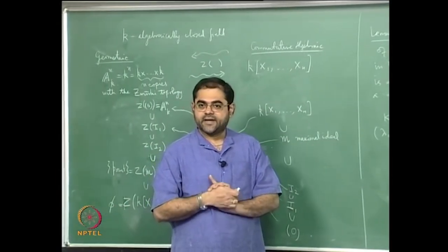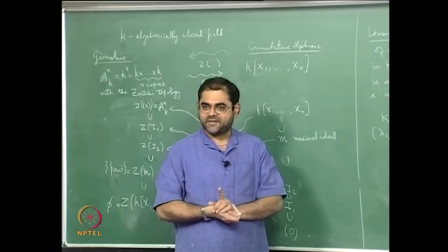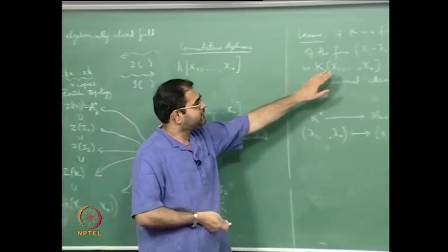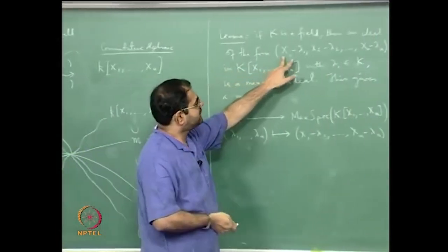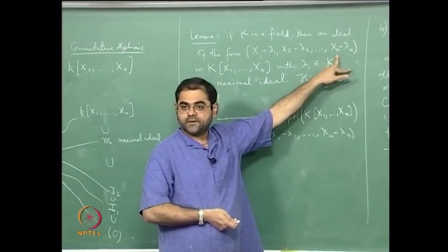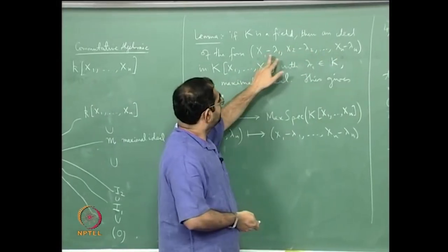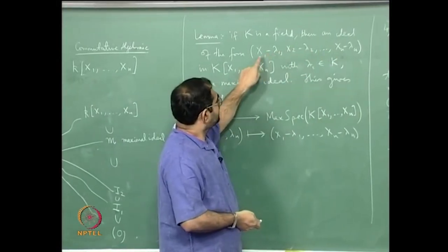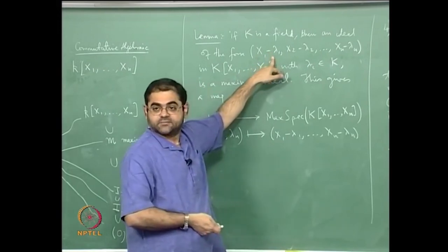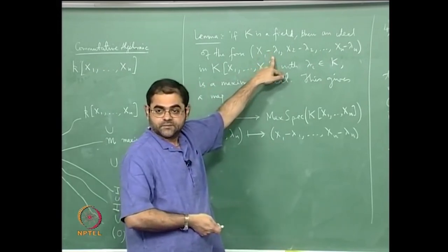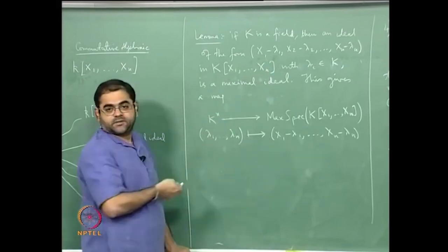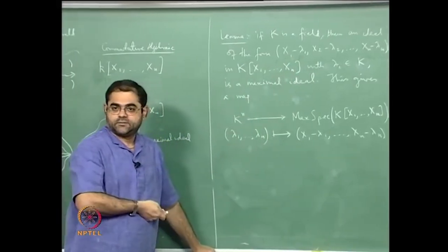Therefore, the ideal generated by the variables is a maximal ideal. The fact that all coordinates being zero is not special — this also holds for other points. You can always find an automorphism of the ring that translates any given point to the origin, and an automorphism carries maximal ideals to maximal ideals. So ideals of this form are also maximal.